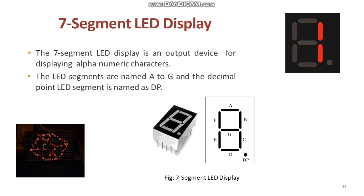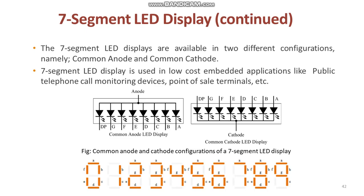The seven segment LED displays are available in two different configurations: common anode and common cathode, as shown in the diagram. In the common anode display, all the anode connections of the LED segments are joined together to logic one. The individual segments are illuminated by applying a ground, that is logic zero, via a suitable current limiting resistor to the cathode. In the common cathode display, all the cathode connections of the LED segments are joined together to logic zero or ground. The individual segments are illuminated by application of a high or logic one signal via the current limiting resistor to forward bias the individual anode terminal.